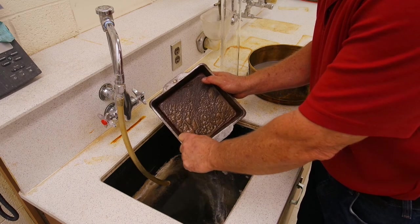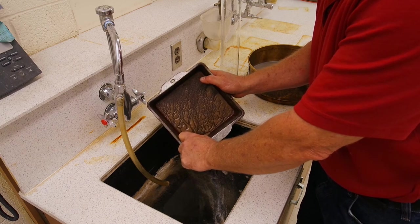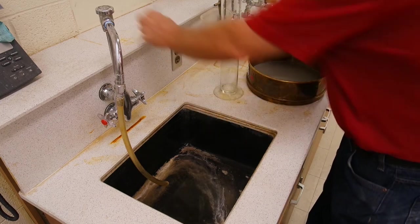The material remaining on the 200 screen will be placed in the oven and dried to get the percent of material retained on the number 200 screen.